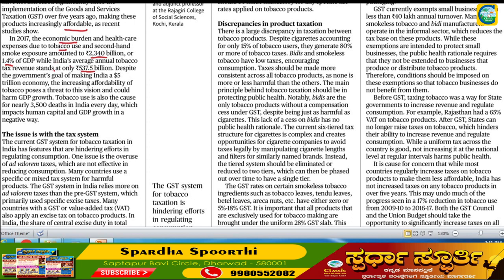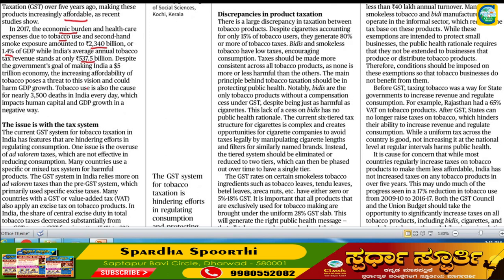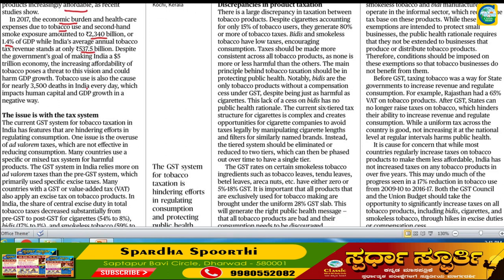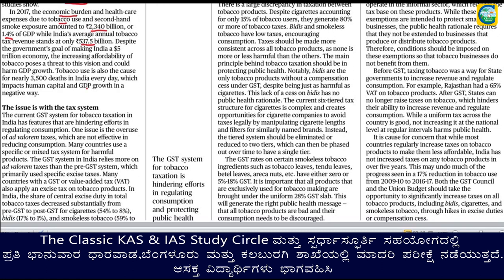Considering a 5 trillion dollar economy target, current levels using the 3 trillion dollar economy benchmark show that affordability is a concern. GDP growth relative to tobacco revenue suggests that the current taxation levels need review. GDP growth comparison shows tobacco tax revenue is not keeping pace with overall economic growth.